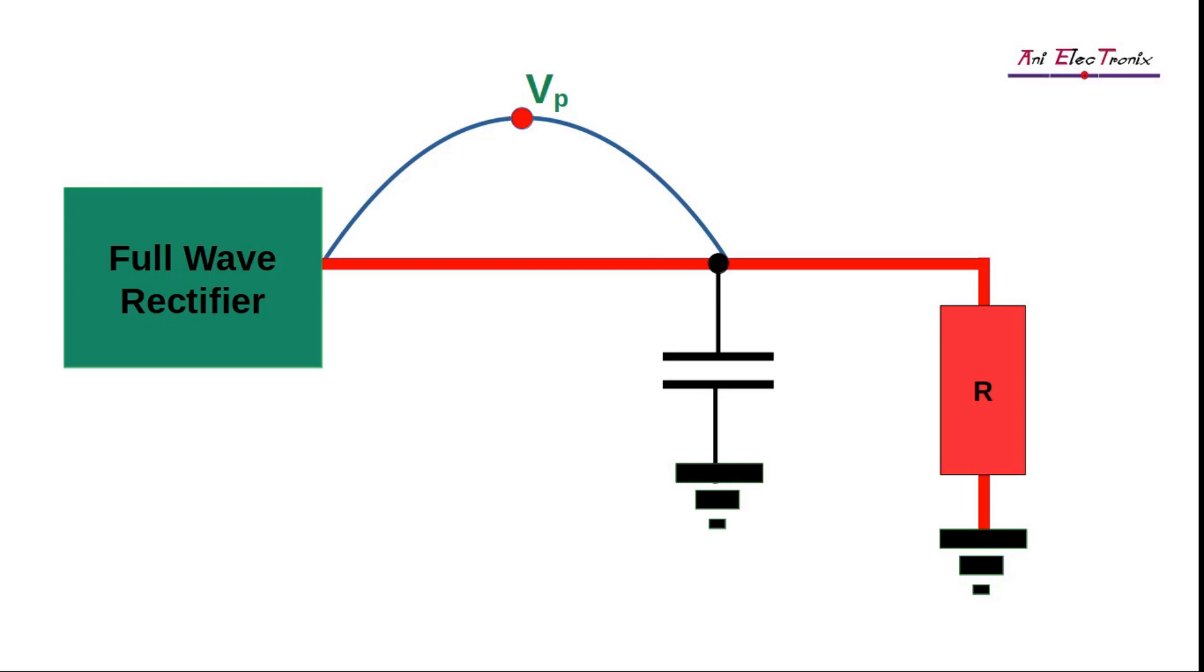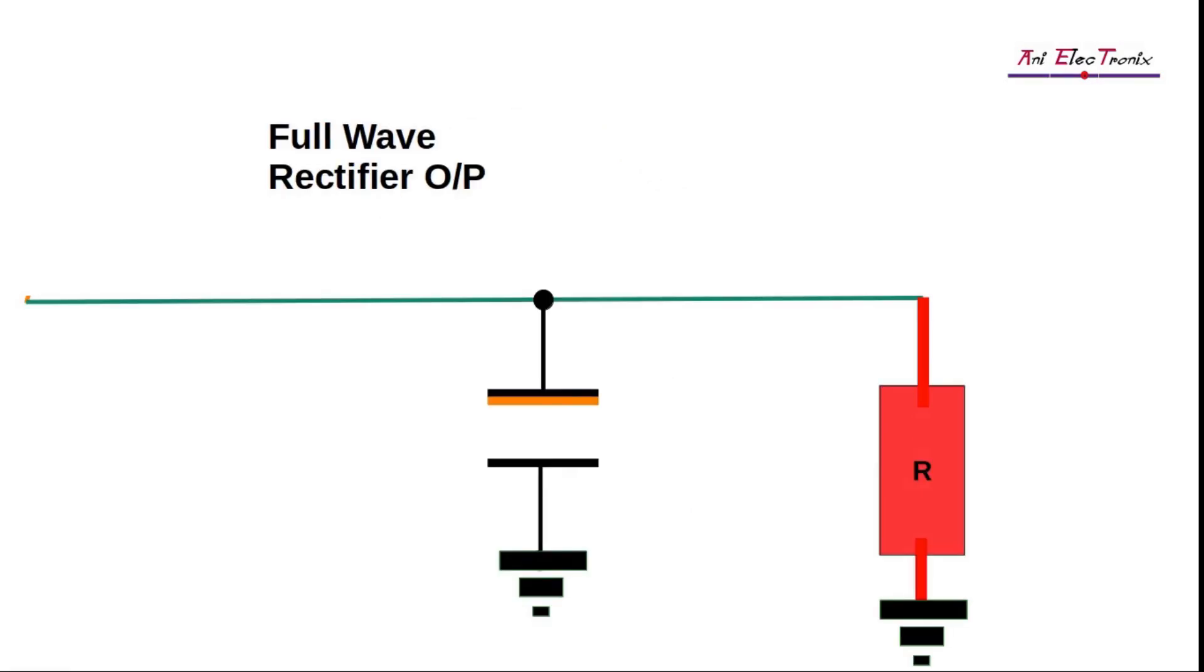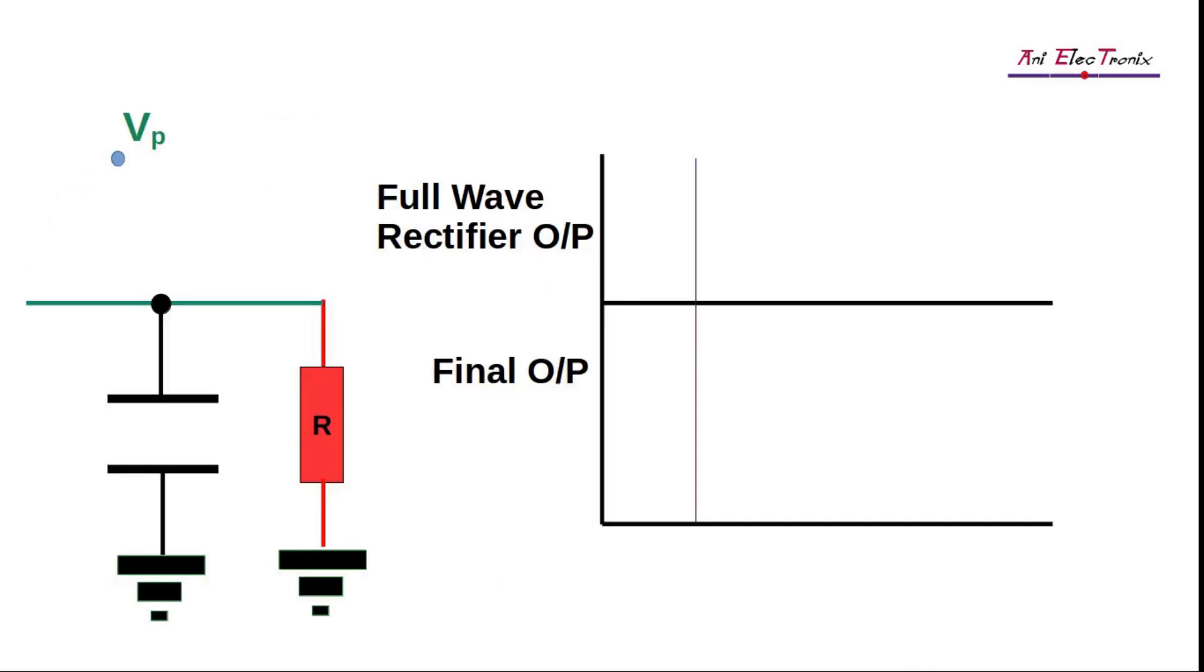At first, the capacitor is not charged. As the input voltage rises, the capacitor will charge gradually and will stop when it reaches Vp. Hence, at the very first stage of charging, we will not observe any current flow at the output.